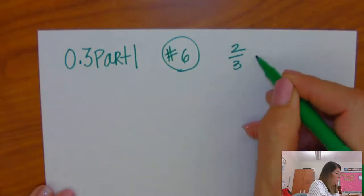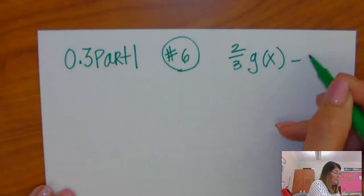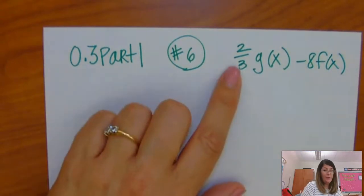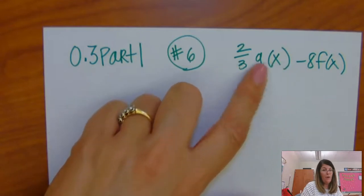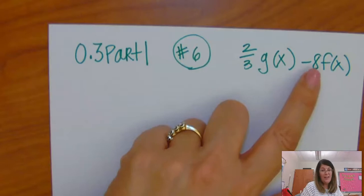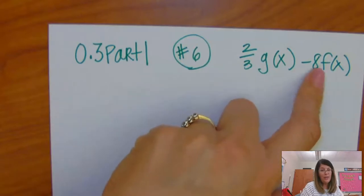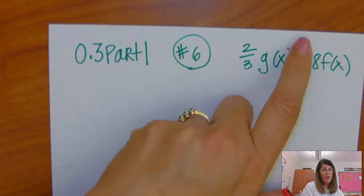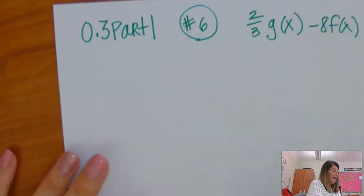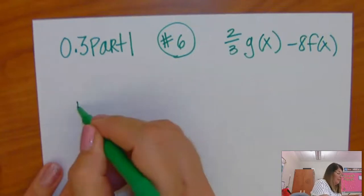It asks you to do 2/3 times g(x) minus 8 times f(x). So, you're going to take 2/3 and distribute it by all the terms in g(x), and you're going to take either a negative 8 and distribute it by all the terms of f(x), or an 8 and distribute it and then subtract it. So, I don't want to do the same exact problem. I want to do a similar problem.